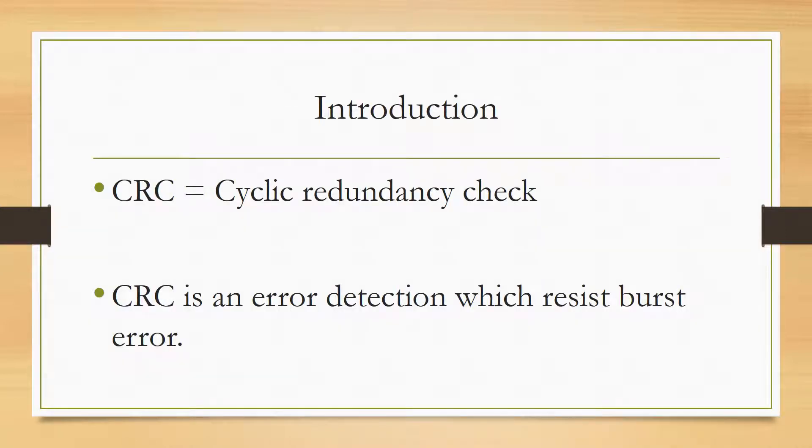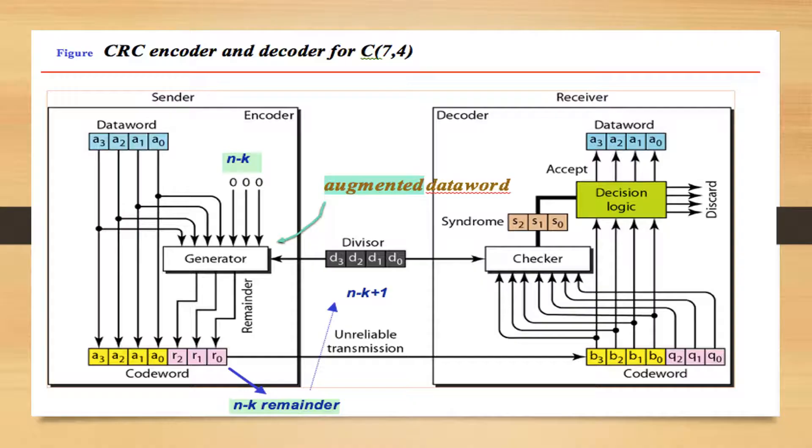CRC (Cyclic Redundancy Check) - there are several methods of error detection, for example parity check, checksum, Hamming distance, and CRC. CRC is one way to resist burst error. This figure describes a CRC encoder and decoder for C(7,4).